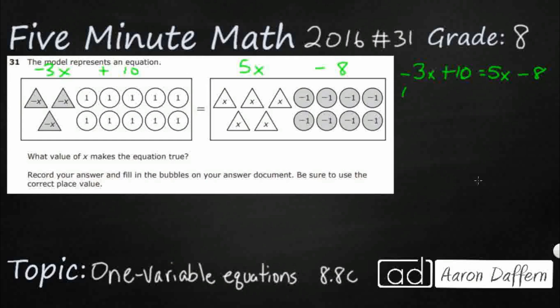So, let's add 3x to both sides. Remember, you can do that as long as you do it to both sides of the equation to keep it balanced. And look what we're going to get here: negative 3x plus 3x, that's the inverse, right? So that cancels itself out. So that's 10 equals - now we've got 8x minus 8.